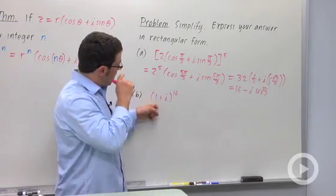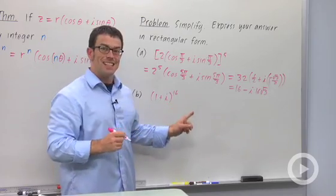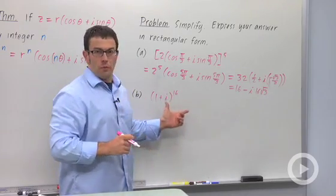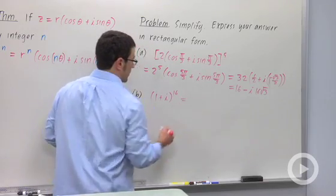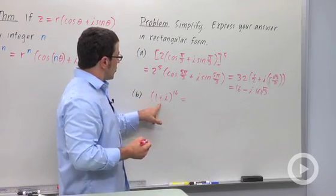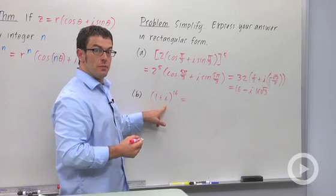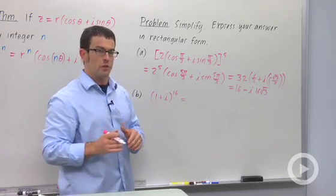Let's do another example. 1 plus i to the 16th. And you really wouldn't want to multiply this out by hand. That looks like a pretty big product. So we first need to switch this into trigonometric form. De Moivre's theorem requires trigonometric form.